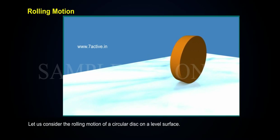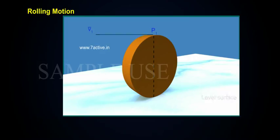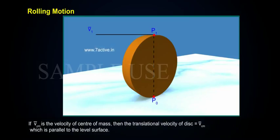Let us consider the rolling motion of a circular disc on a leveled surface. At any instant, the point of contact P₀ of the disk with the surface is at rest. If VCM is the velocity of the center of mass, then the translational velocity of the disk is equal to VCM, which is parallel to the level surface.